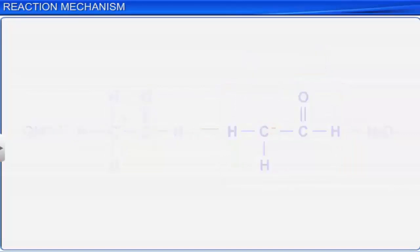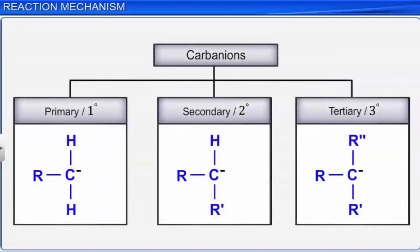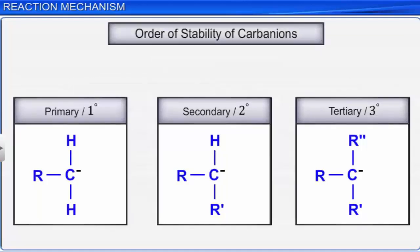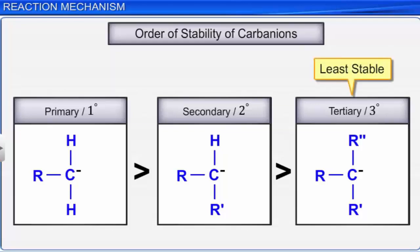Carbanions are also classified as primary, secondary, and tertiary carbanions depending on the number of alkyl groups attached to the negatively charged carbon. Stability of carbanions decreases with increasing number of alkyl groups bonded to the charge-bearing carbon atom. Hence, tertiary carbanions are highly unstable, while primary carbanions are the most stable.